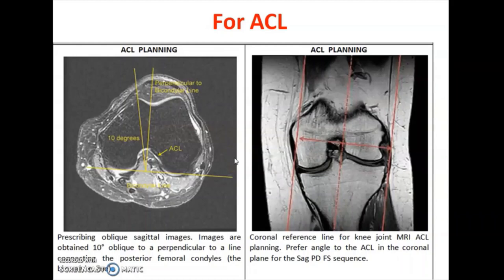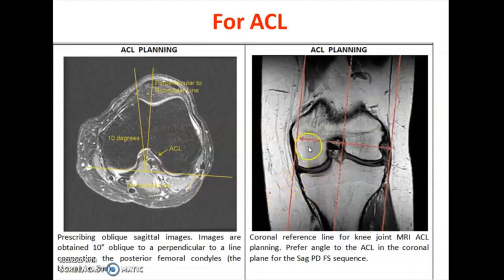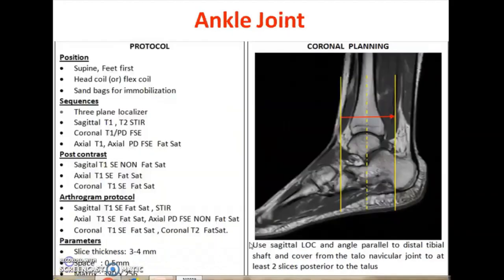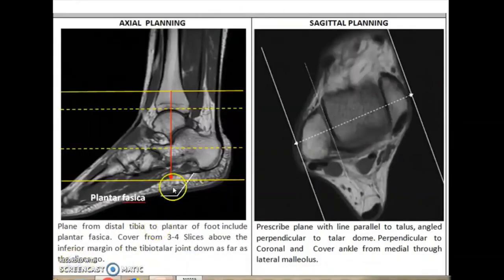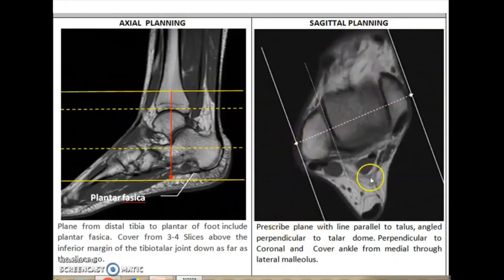For the anterior cruciate ligament, plan a 10-degree oblique to the perpendicular line connecting the posterior femoral condyles. If you draw a line connecting the condyles and then a line perpendicular to it, planning 10 degrees oblique to that perpendicular line gives a very nice ACL view. Similarly, coronal planning is also useful for the ACL. For the ankle, plan parallel to the tibial shaft to cover from the talonavicular joint, at least two slices posterior to the talus. Axial coverage should extend anterior to the ankle joint, and oblique sagittal planning is perpendicular to the talar dome.